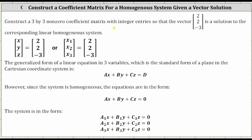Since the given vector is a solution, if we assume the x, y, z coordinate system, we know x equals two, y equals two, and z equals negative three. Or more generally, we could assume x sub one equals two, x sub two equals two, and x sub three equals negative three.